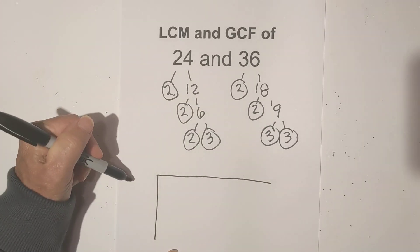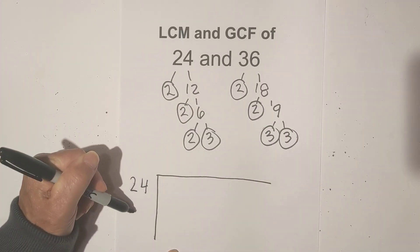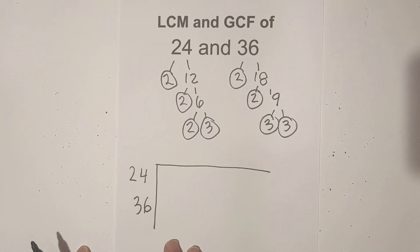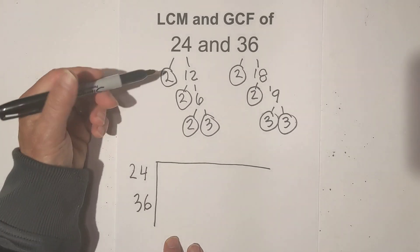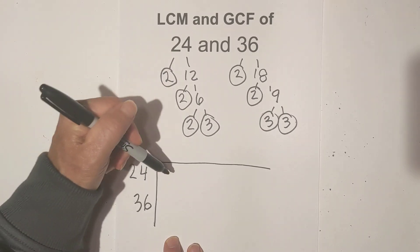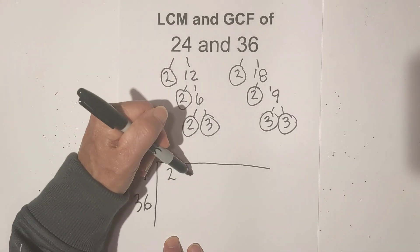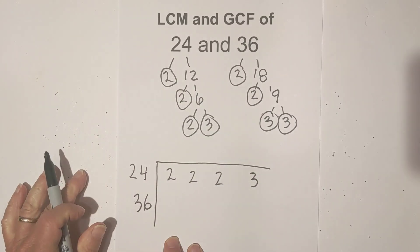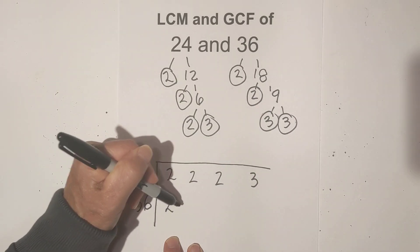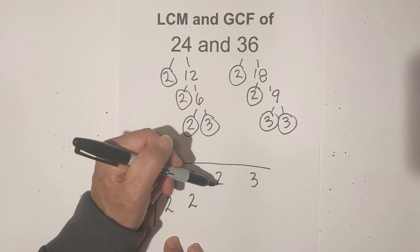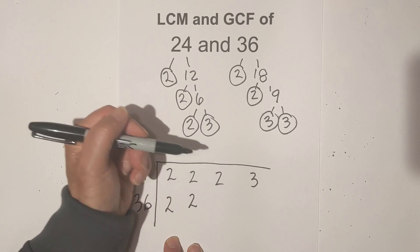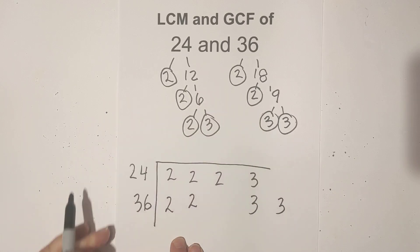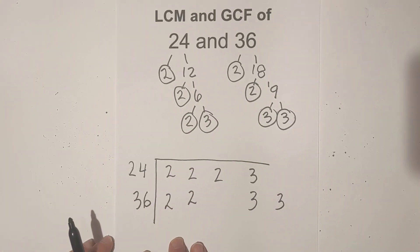Now what I do is I use a chart, so we have 24 and 36 in the chart. I transfer these numbers into the chart. So I have a 2 and a 2 and a 2 and a 2 and a 3, and now I am going to go 2, 2. I don't have a 2 here so I am going to skip that, and then I have a 3 and a 3.